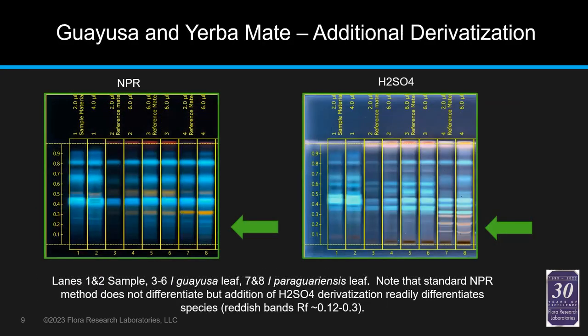Another example from the prior presentation: looking at Guayusa and Yerba Mate. By taking from the NPR and doing the next step of sulfuric derivatization, we can see bands that pop out allowing differentiation of these two materials. The reddish bands in the 0.12 to 0.3 Rf range are diagnostic for one species, making it much easier to make the call.